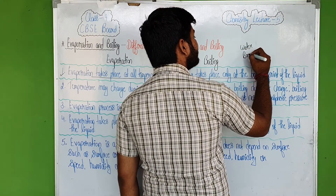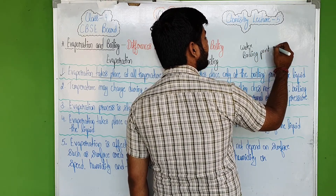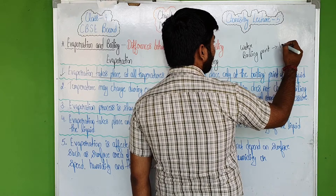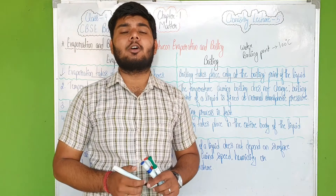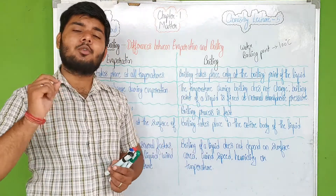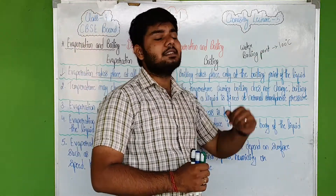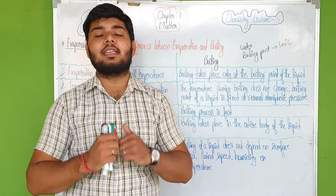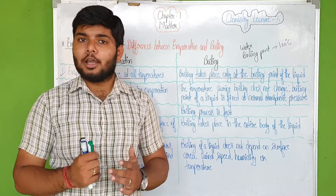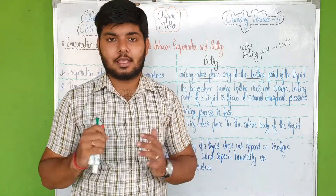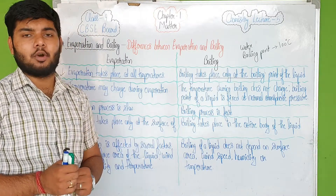The boiling point of water is 100 degrees Celsius. So if we have to boil water, we need to provide heat until it reaches 100 degrees Celsius. Only then will the water boil. This is the first difference between evaporation and boiling.